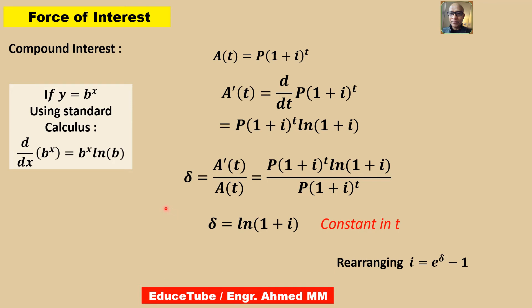One important thing to keep in mind: in the case of compound interest growth, the force of interest is constant. By looking at this delta, you can see there is no t — t is omitted. That is why the force of interest is constant as long as the effective annual interest rate is constant. So when the force of interest is constant, it can be expressed as delta equal to ln of 1 plus i. Rearranging, we can also write i equal to e to the power delta minus 1.